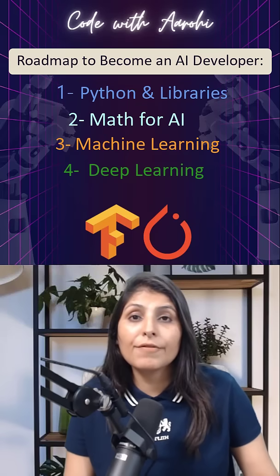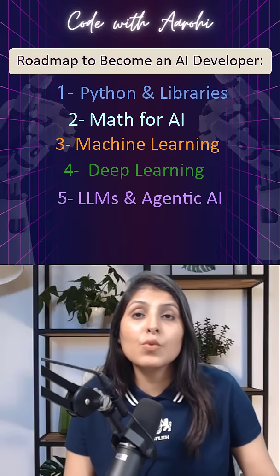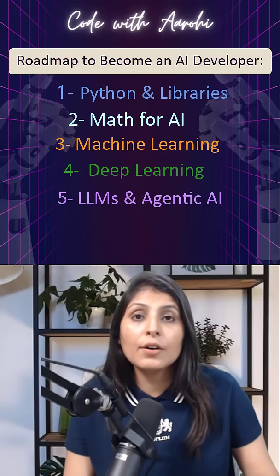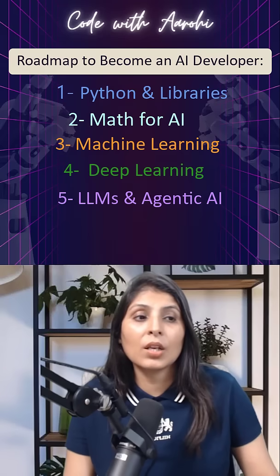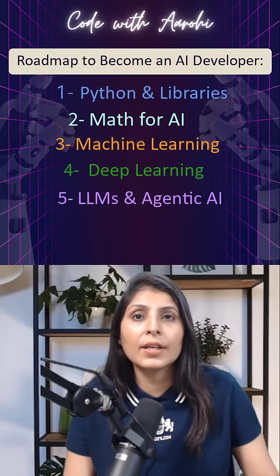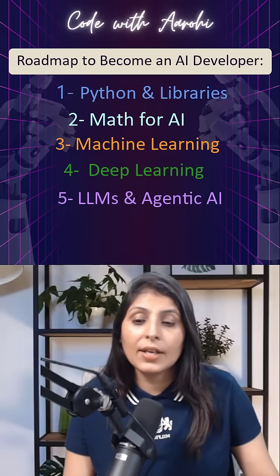After that, step number five is move to LLMs and generative AI. Here you will understand the concept of transformers and then learn about agentic AI.